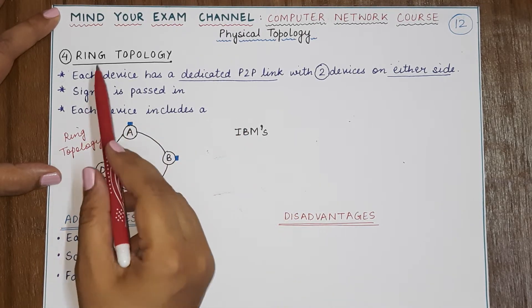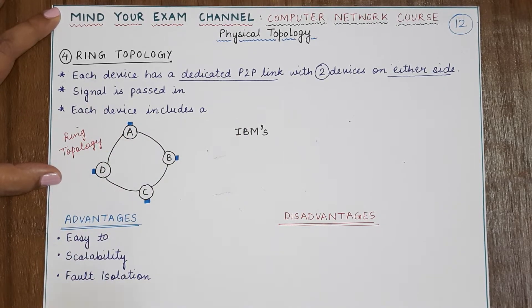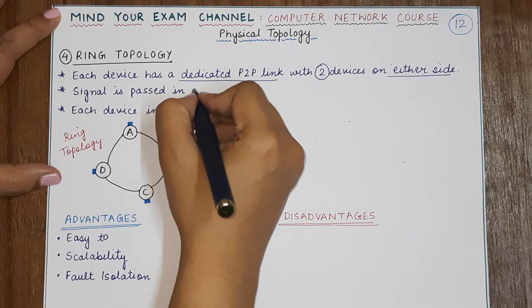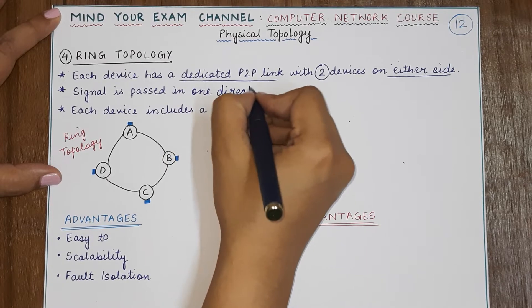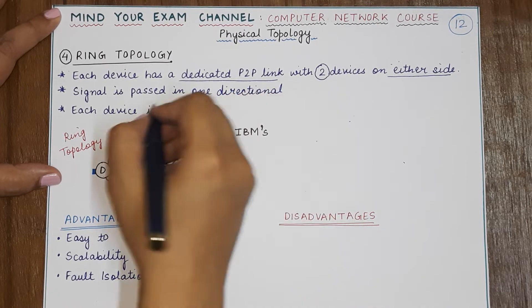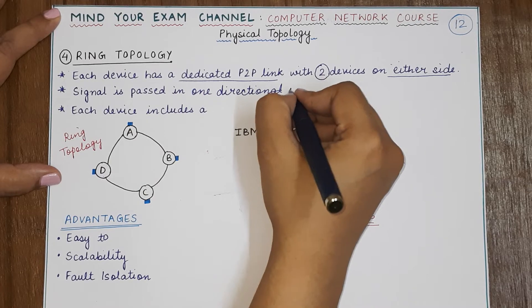Okay, so now in ring topology the signal is passed in one direction only. So this is a very important point you must remember—in one direction only.